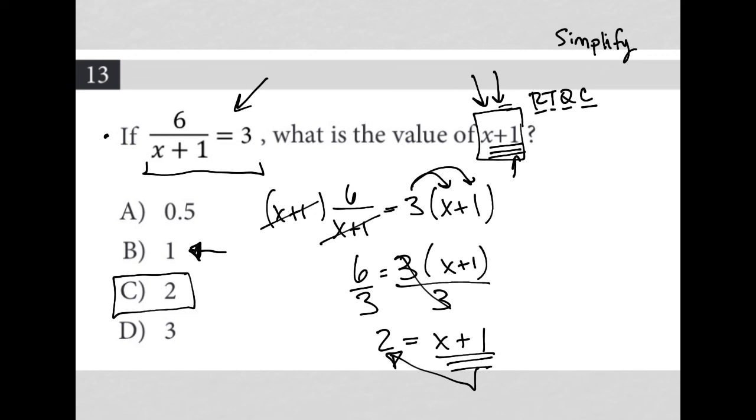So if by chance you solved for x and didn't quite pay close attention to what was actually being asked, you would choose B and have no idea that you made a mistake. So always be mindful of what's actually being asked by the question.